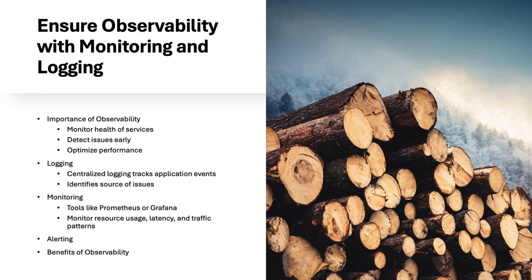Proper observability is crucial for scalable and resilient applications. Key tools include logging, monitoring, and alerting. Centralized logging tracks events, monitoring tools like Prometheus and Grafana ensure optimal performance, and alerts notify teams of critical issues. Investing in observability maintains system health.